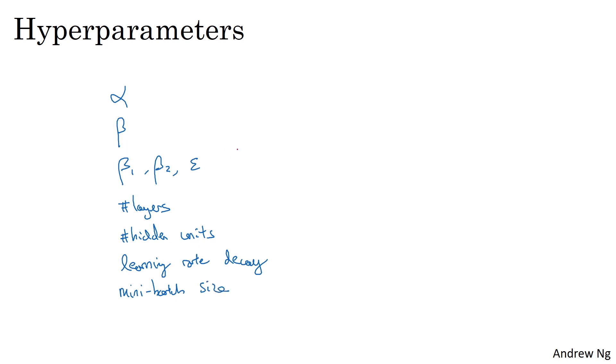So it turns out some of these hyperparameters are more important than others. For most learning applications, I would say alpha, the learning rate is the most important hyperparameter to tune.